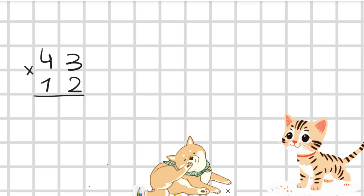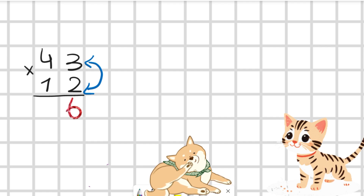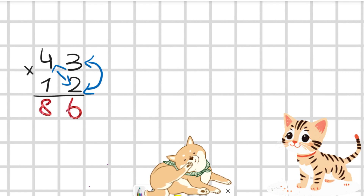Our next question is 43 multiplied by 12. Again the same steps as we used last time. 3 multiplied by 2 — it's good. Now we are going to do like this: 4 ones are 4, 4 twos are 8.